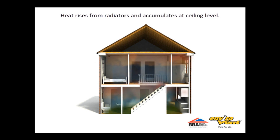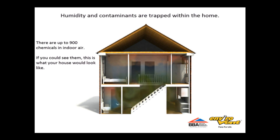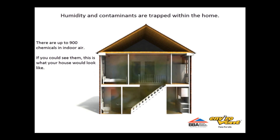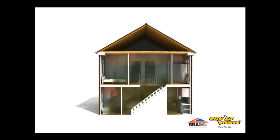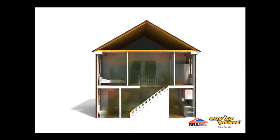If you could see the heat distribution along with all of the airborne gases and contaminants in a poorly ventilated home, then it would probably look something like this. We call this a viral soup. The simulation conditions are taken at the worst possible case scenario where indoor relative humidity is at 100% and outdoor relative humidity is also 100%.